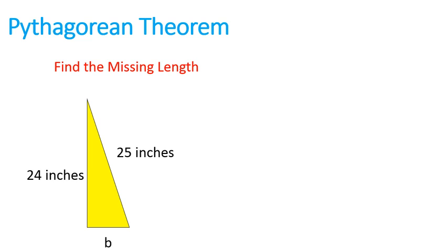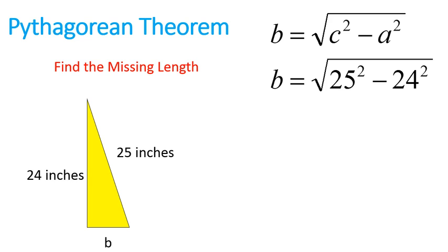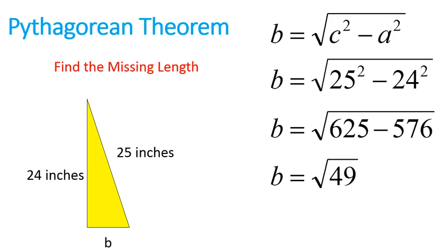Find the missing length, b. So, in this case, we're given c, the longest side, and we're given a, 24 inches. So, what we're going to do is plug them into this equation. Remember, it's just the longest length squared minus the other given length. So, 25² minus 24². 25² is 625 minus 24², which is 576. We'll do that subtraction, which gets down to the square root of 49.